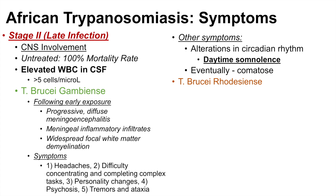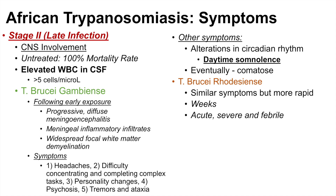An infection with Trypanosoma brucei rhodesiense has similar symptoms to brucei gambiense but with a more rapid onset, typically taking only weeks. Brucei rhodesiense infection is acute, severe, and febrile, and it can also have symptoms of myocarditis and pericarditis.